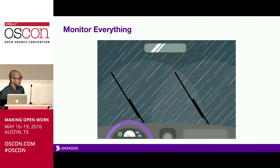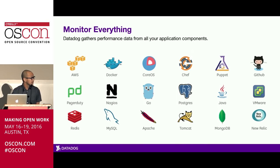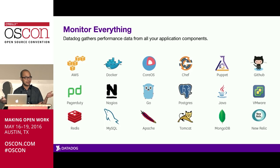At Datadog, we like to use the analogy that running software in production without monitoring is like driving without visibility — you have no idea how to stay on the road or that you're about to crash. Datadog is a cloud-based service for monitoring servers, databases, applications, and tools. We think the best way to monitor any complex system is to collect as many metrics as you can from all of them at a sufficiently fine granularity, so you can see any important changes.